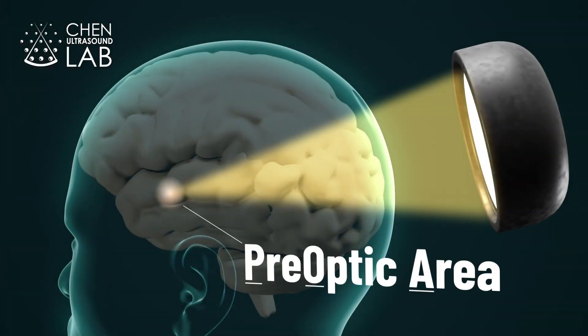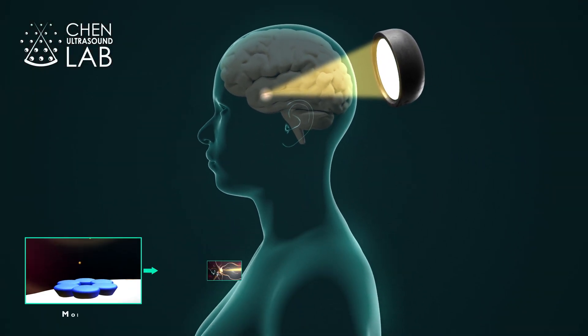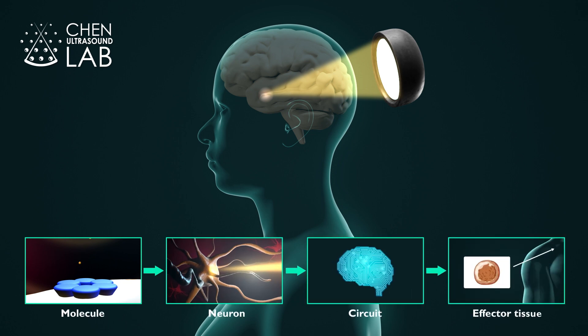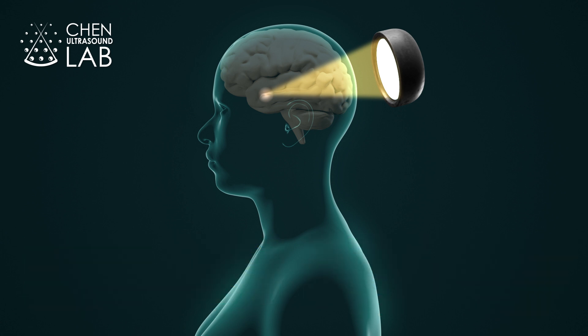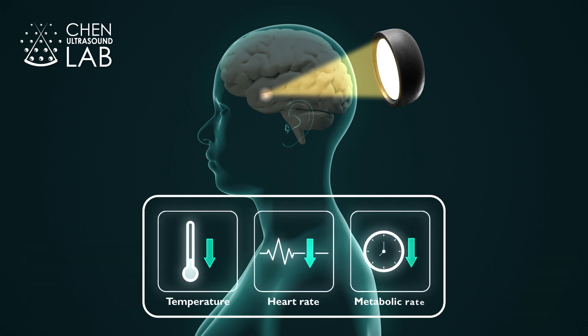The activation of POA neurons leads to the activation of downstream neural circuit and peripheral effector tissues, including brown adipose tissue. This technology represents a significant technological advancement in evoking artificial torpor.